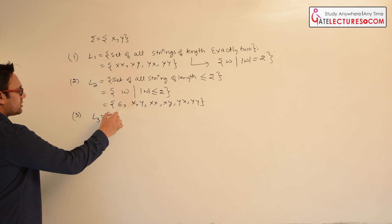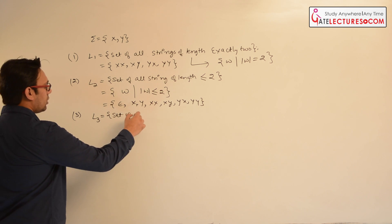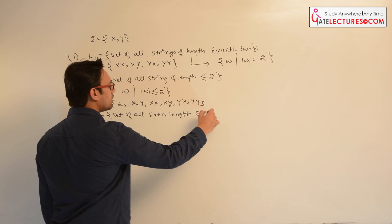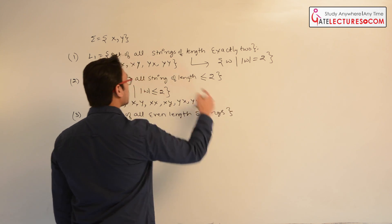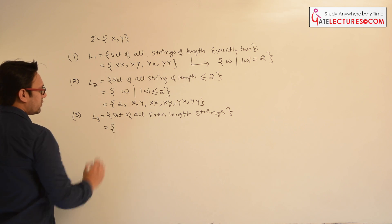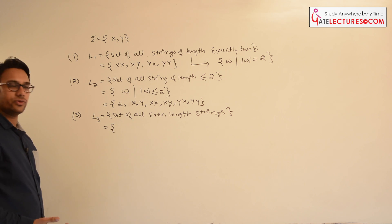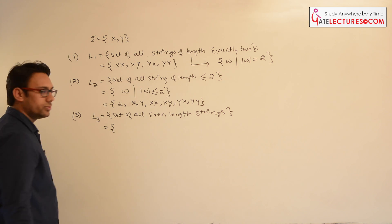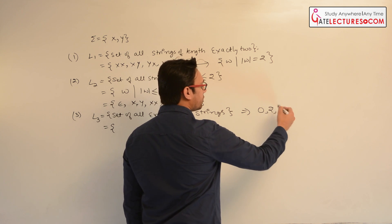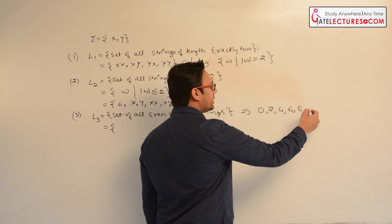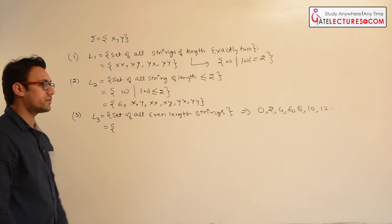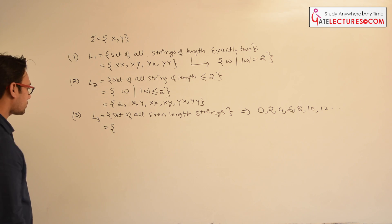Now we have language L3 which is the set of all even length strings over the alphabet {x, y}. The length can be 0, 2, 4, 6, 8, 10, 12, and so on — that means all even lengths.